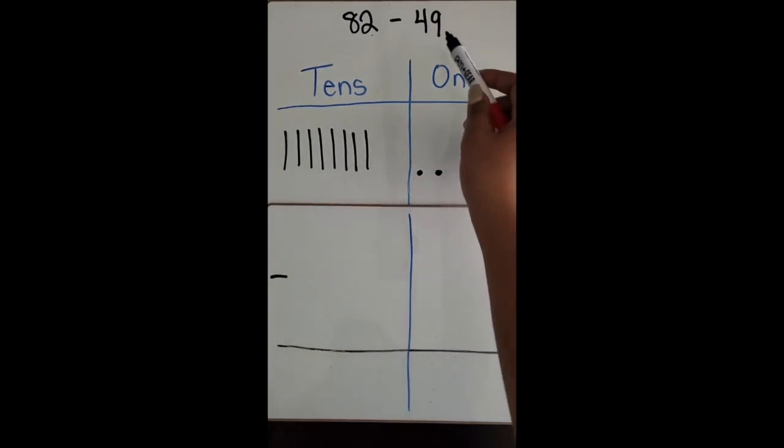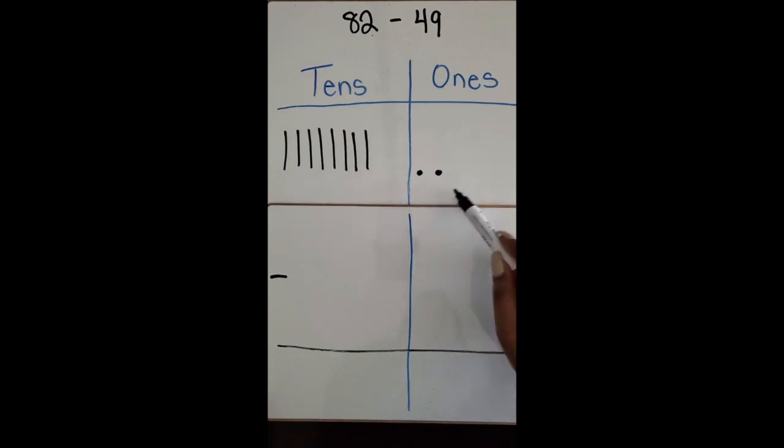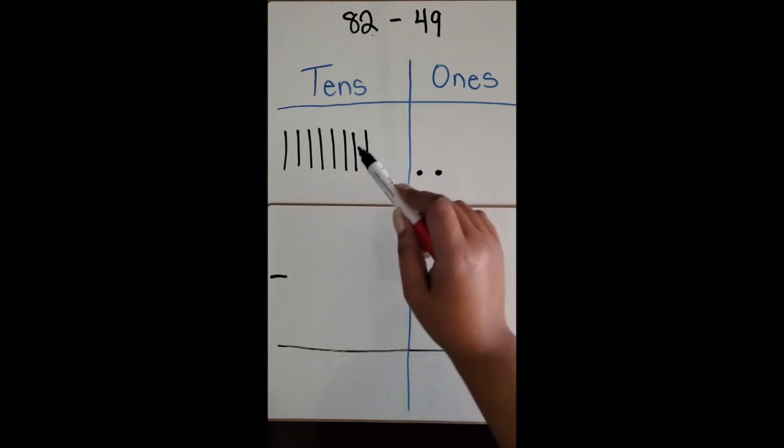All right, so now I want to subtract 49, which has four tens and nine ones. I only have two ones here, so I'm going to regroup one of my tens for ten ones.